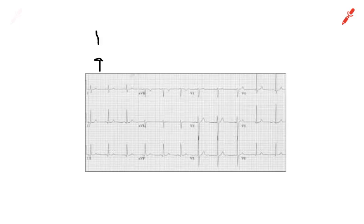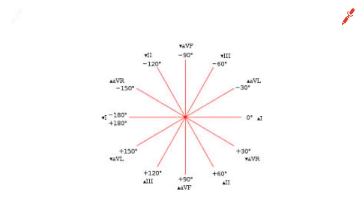Lead 1 is positive — so it's a positive deflection mostly. Lead AVF, you can easily see that that's mostly positive. So you have a positive in Lead 1 and a positive in Lead AVF. Now you have to know all the angles — you have to draw your circle and know it, because if you mess the circle up, you'll miss everything. Lead 1 is right here at 0 degrees. Lead AVF is right here at 90 degrees down.